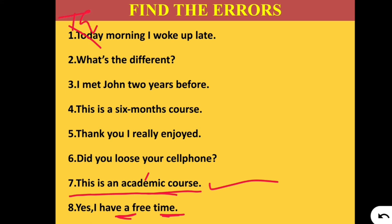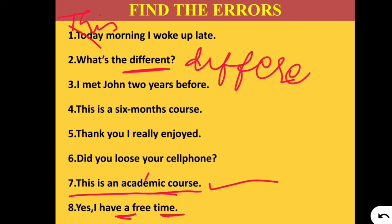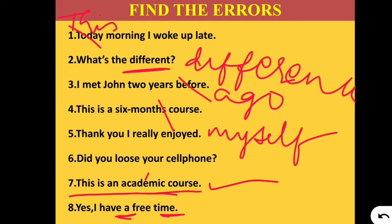To recap: 'Today morning' becomes 'this morning.' 'What's the different?' becomes 'What's the difference?' 'I met John two years before' becomes 'two years ago.' 'A six months course' becomes 'a six month course.' 'I really enjoyed' becomes 'I really enjoyed myself.' 'Did you loose your cell phone?' becomes 'Did you lose your cell phone?' 'Academic' should be pronounced 'acaDEMic.' And 'I have a free time' becomes 'I have free time.' Out of eight, how many did you score? Let me know in the comment section.